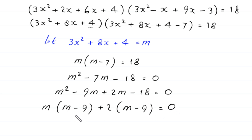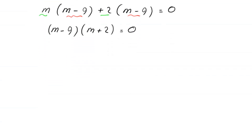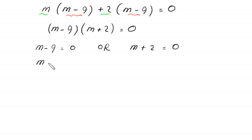As you can see, the expression (m minus 9) is a common factor. So we factor it out: (m minus 9)(m plus 2) is equal to 0. From this equation we get m is equal to 9, and from the other equation we get m is equal to negative 2.